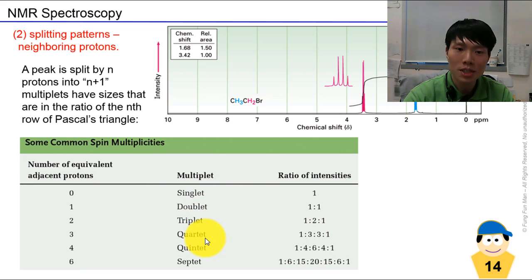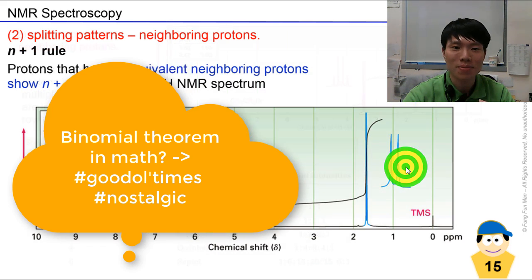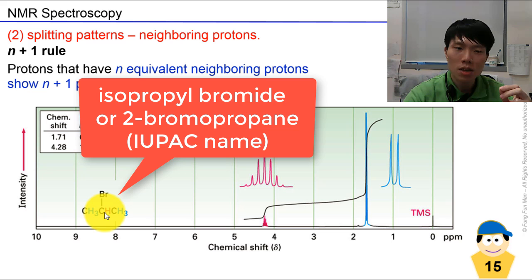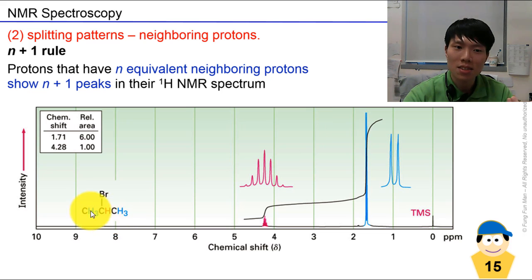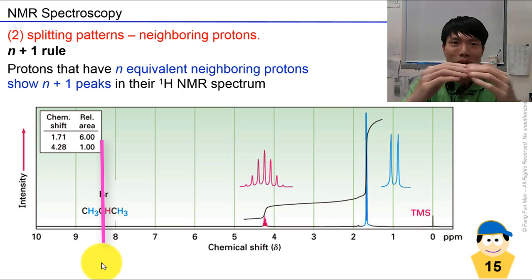This follows Pascal's triangle: singlet, doublet, triplet, quartet, septet. The intensities of the fine lines follow the pattern — 1:1 for doublet, 1:2:1 for triplet, 1:3:3:1 for quartet, resembling the binomial theorem. In isopropyl bromide we see two signals — pink and blue. The pink signal has six neighboring protons, so 6+1 gives a septet. The blue protons have one neighboring proton, so 1+1 gives a doublet. The two blue methyl groups are equivalent by symmetry, connecting to the same carbon.